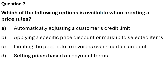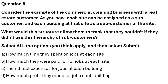Question 7: Which of the following options is available when creating a price rule? Options include: automatically adjusting a customer's credit limit, applying a specific price discount or markup to selected items, limiting the price rules to invoices over a certain amount, or setting price based on payment terms. The correct answer is Option B: applying a specific price discount or markup to selected items.